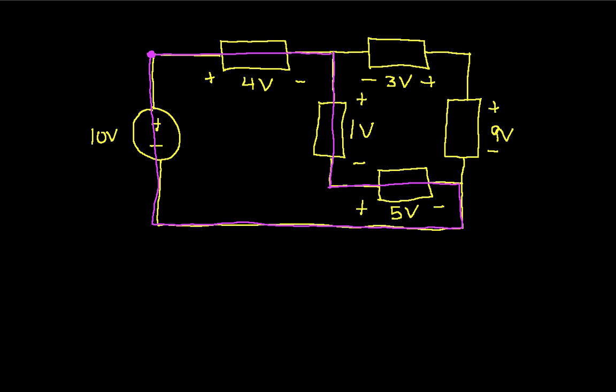If I encounter a voltage going from a higher potential to a lower potential, as I would here, I write it down as a positive voltage. So the first voltage I encounter is 4 volts. Now I come turn the corner, I encounter the 1 volt drop, and again I'm going from higher to lower potential, so I can say that's 1 volt.